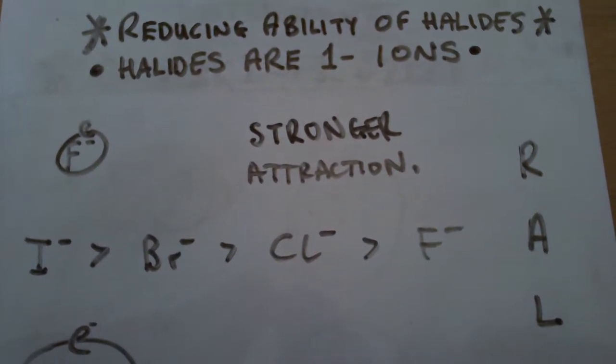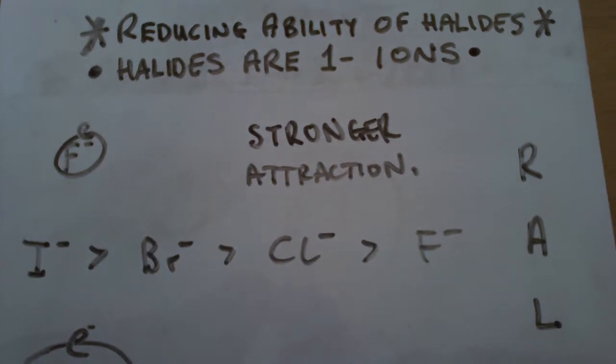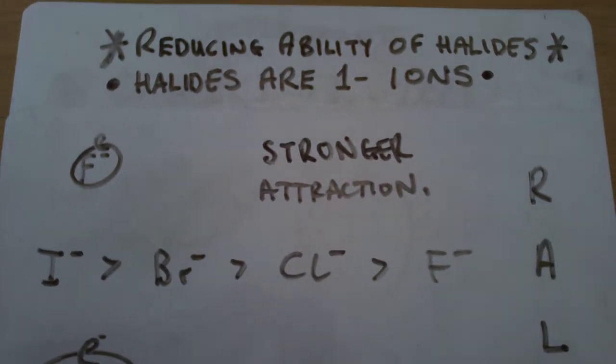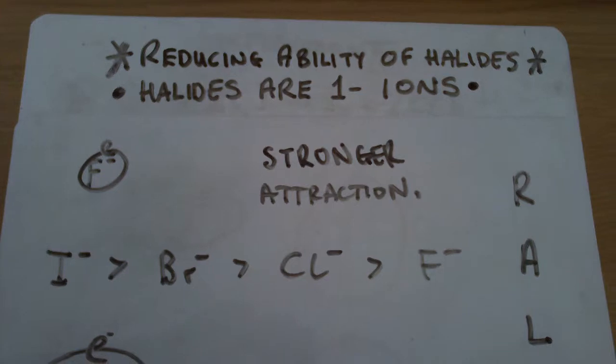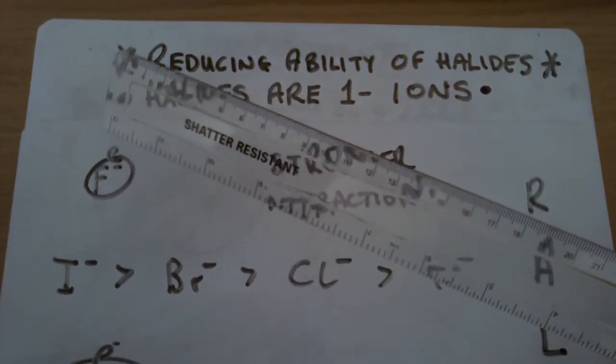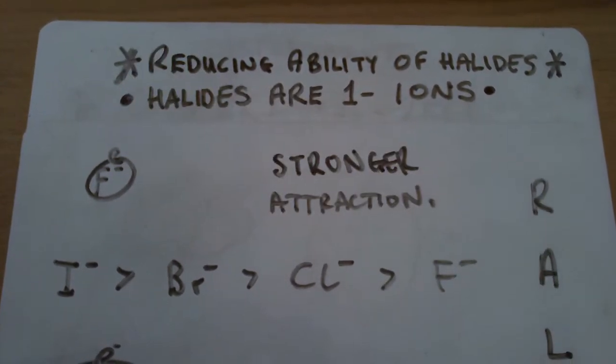Fluoride F- has a stronger attraction than the other halide ions, so it holds onto its outer electrons much stronger because the nucleus here is at a small distance from its outer electron.